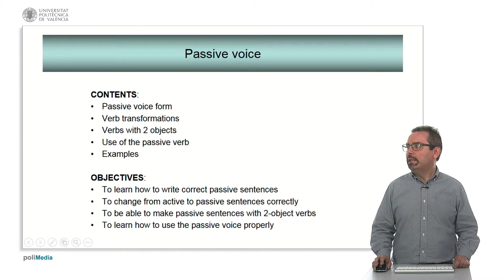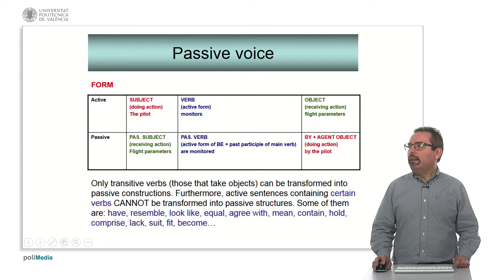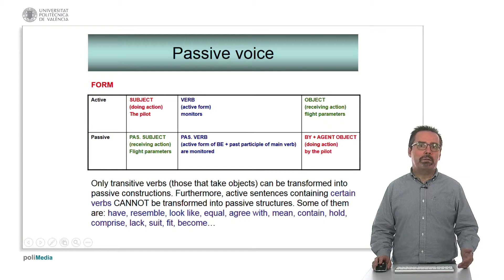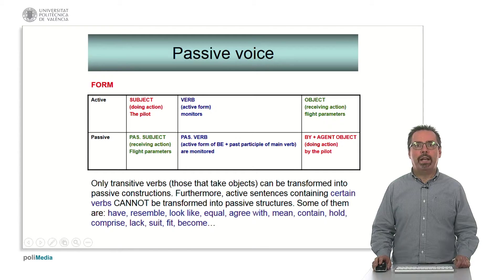And to learn how to use the passive voice properly in English. Here we have an example of an active and a passive sentence. In the active sentence the subject carries out an action. The verb is in the active form and the object receives the consequences of this action. For example, the pilot monitors flight parameters.